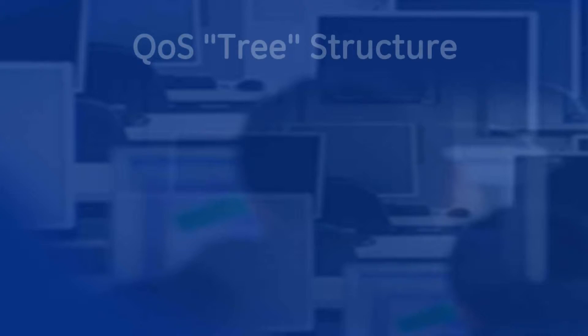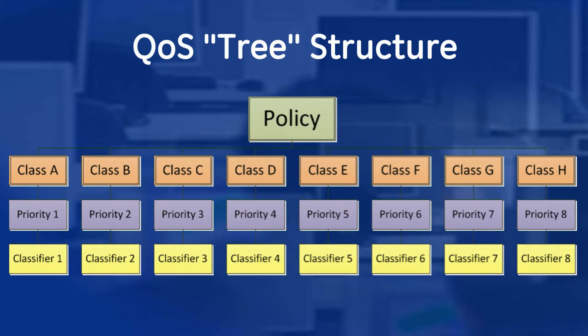Let's look at a generic QoS tree structure to visualize the pieces covered thus far. As you can see, we have a main policy at the top, which contains up to eight classes. Note that the class names are arbitrary and can be any name you wish. The classes themselves each contain a priority value.